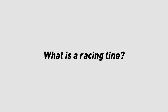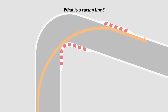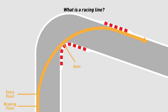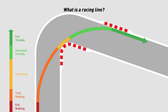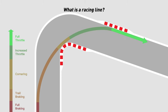First, let's explain what a racing line is. The racing line is an arc drawn by a curve according to the geometric center, also known as the geometric racing line. The geometric racing line is the fastest when only considering going through a single corner. The four main sections of a racing line are the braking point, corner entry point, apex, and the exit point. Correspondingly, the five stages of cornering are full braking, trail braking, cornering, increased throttle, and full throttle.